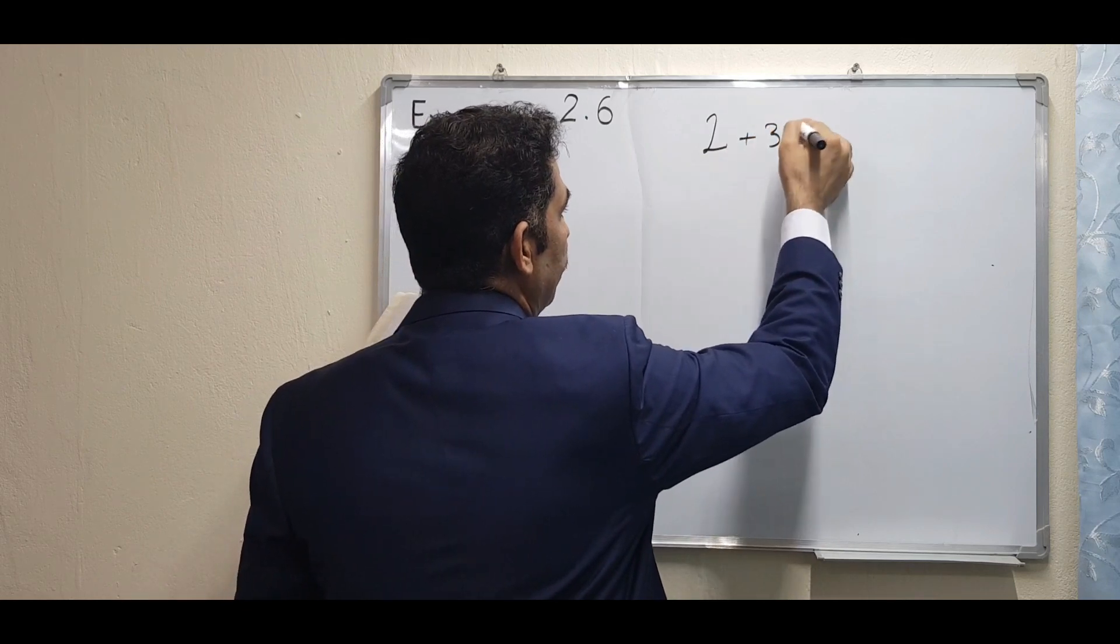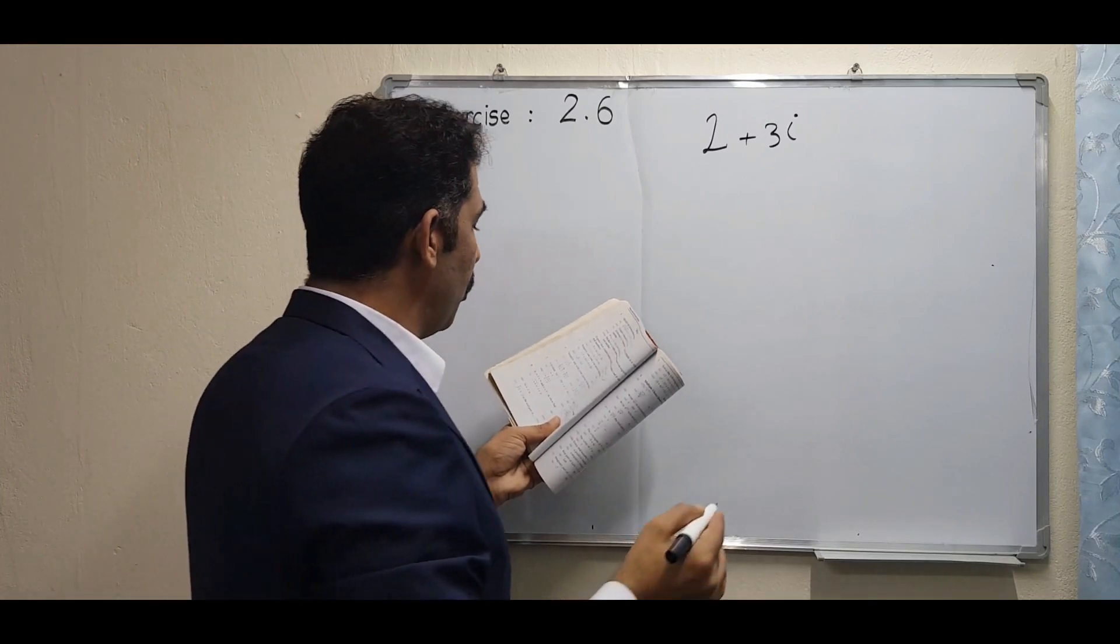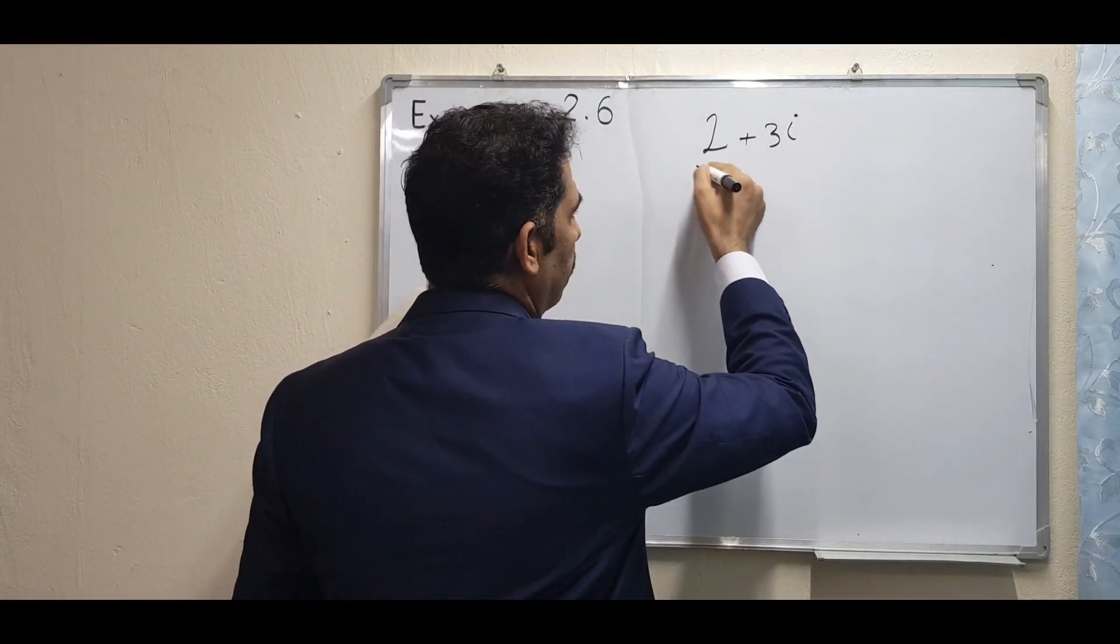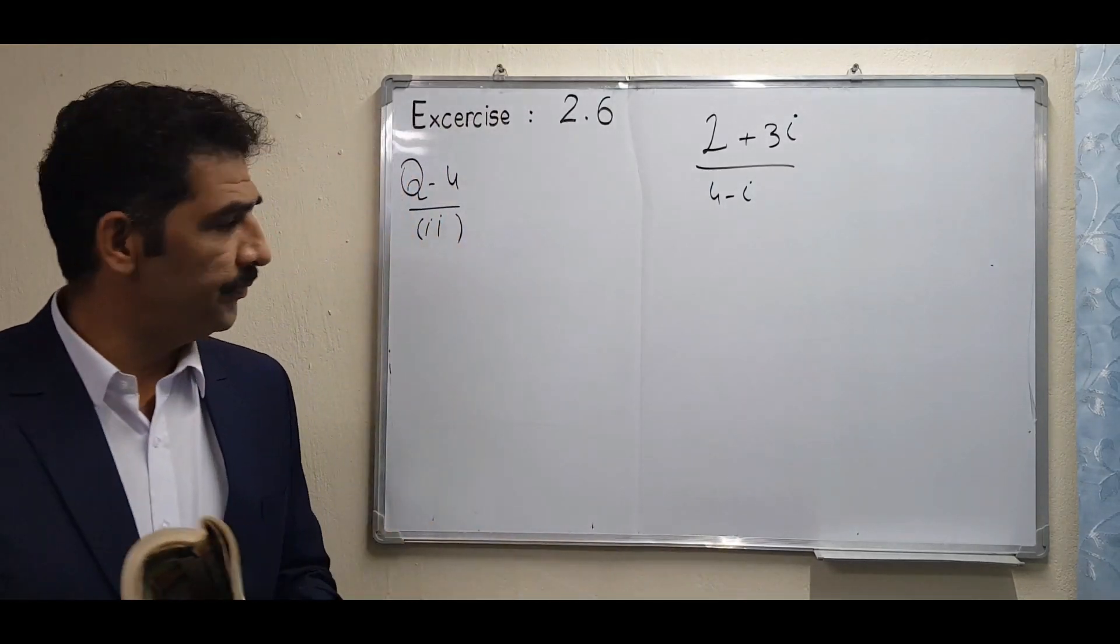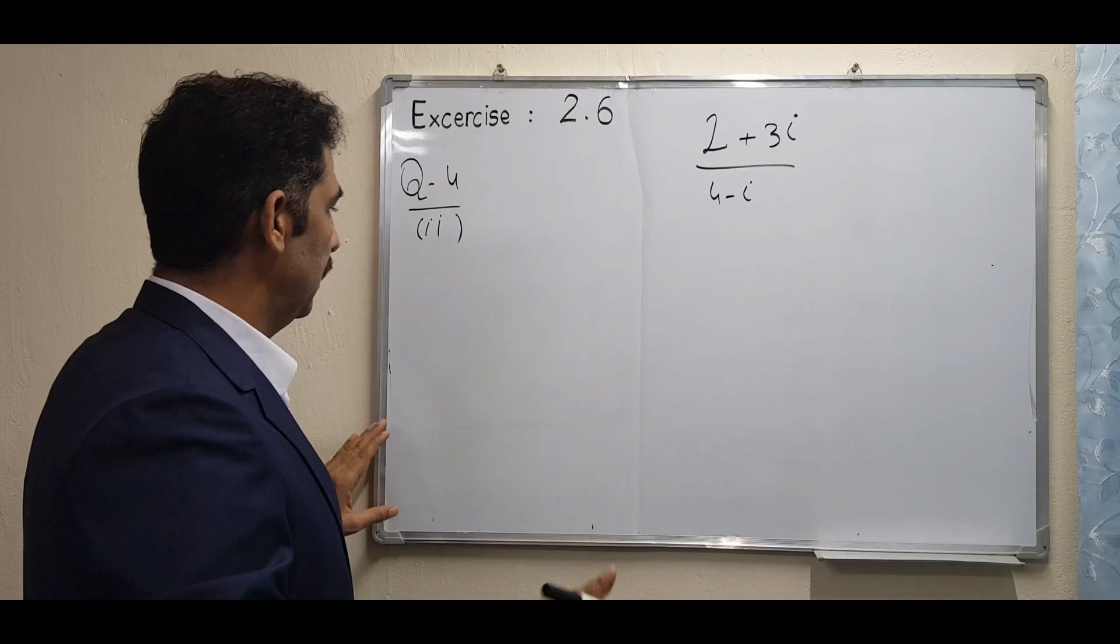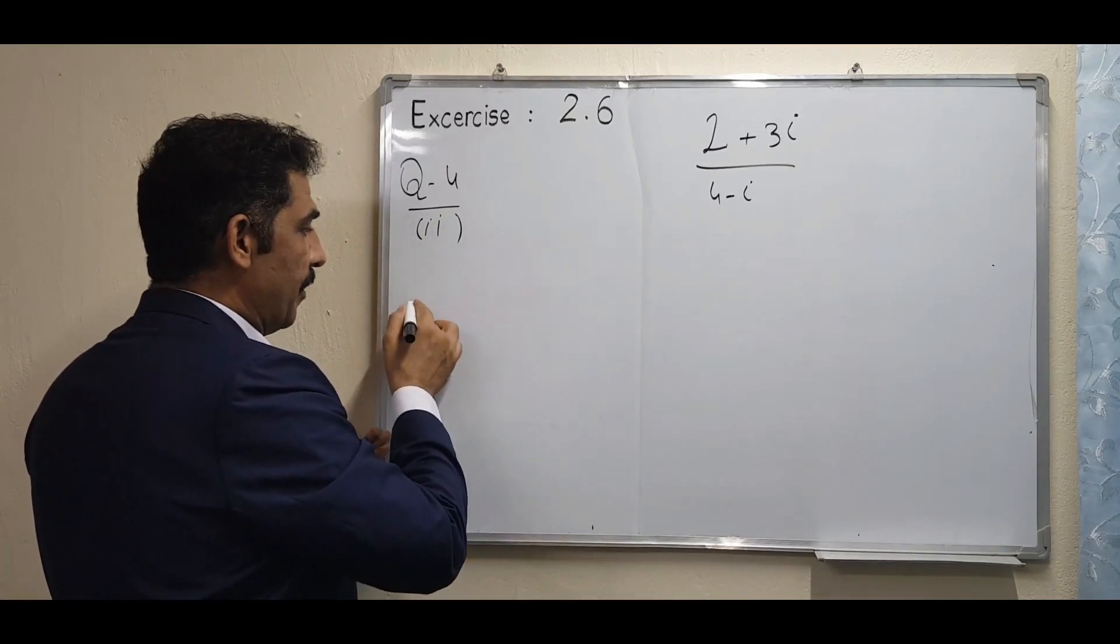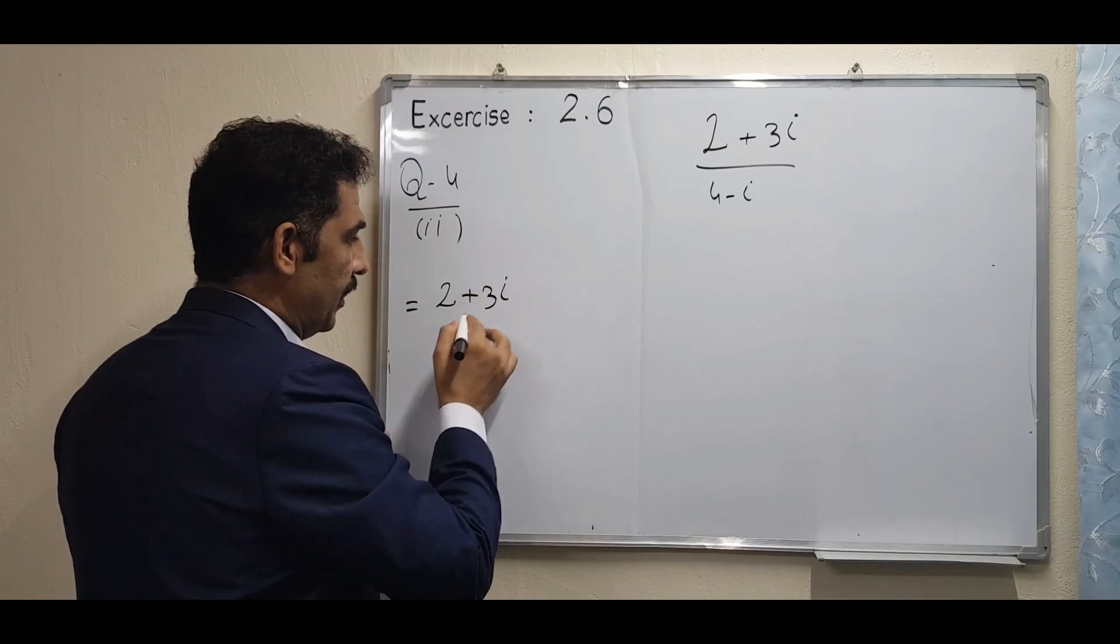That is the statement of the question. I will explain the first step. You have to write the statement of the question: (2 + 3 iota) over (4 - iota).